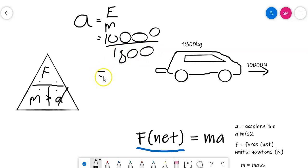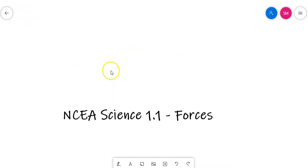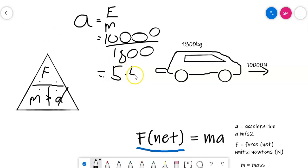And that equals 5.55. Or let's say 5.6. We'll say 5.6 because we're given two significant... Oh, we should actually probably round this up to 6. So 6 meters per second per second.